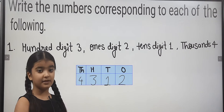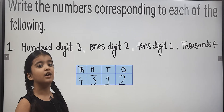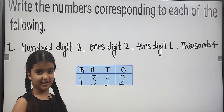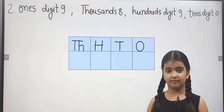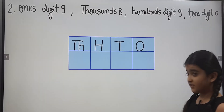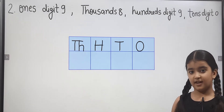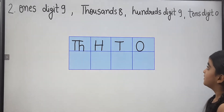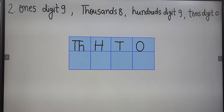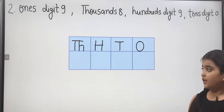Let's write another problem. Ones digit is nine. Thousands is eight. Hundreds is nine. Tens is zero.